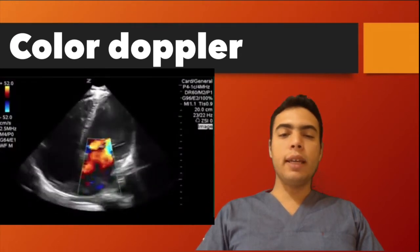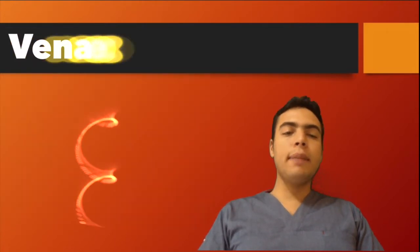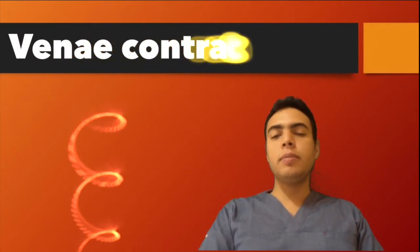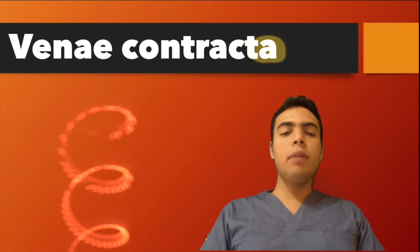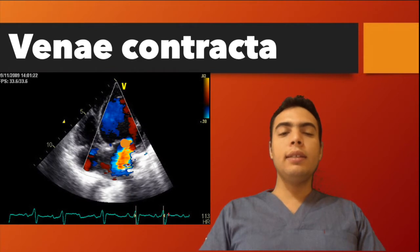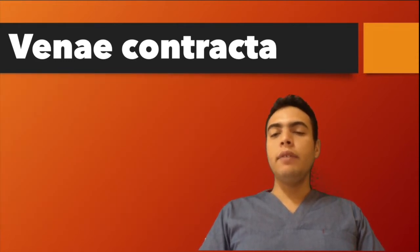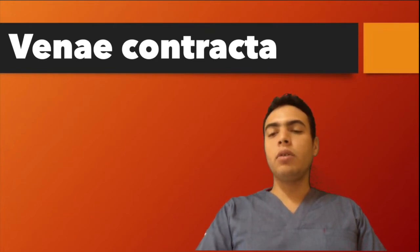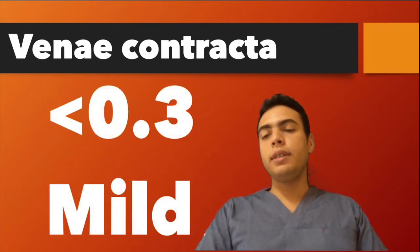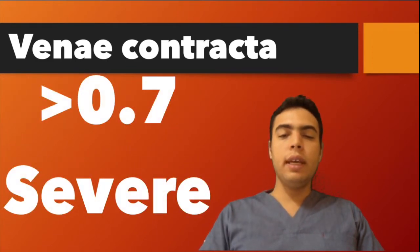The most important step in assessing regurgitation severity is measurement of the vena contracta — the narrowest part of the mosaic color jet, measured here by 2D planimetry. If it is less than 0.3 cm it is mild regurgitation; between 0.3 and 0.7 cm is moderate.